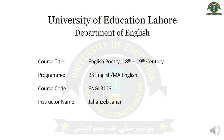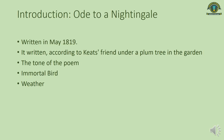'Ode to a Nightingale' was written by John Keats in May 1819. It was written either in a garden under a plum tree, according to Keats's friend, or in a room where Keats was sitting and listening to the sound of a nightingale from the window. It was the spring of 1819. The tone of the poem rejects the optimistic pursuit of pleasure found in Keats's earlier poems.